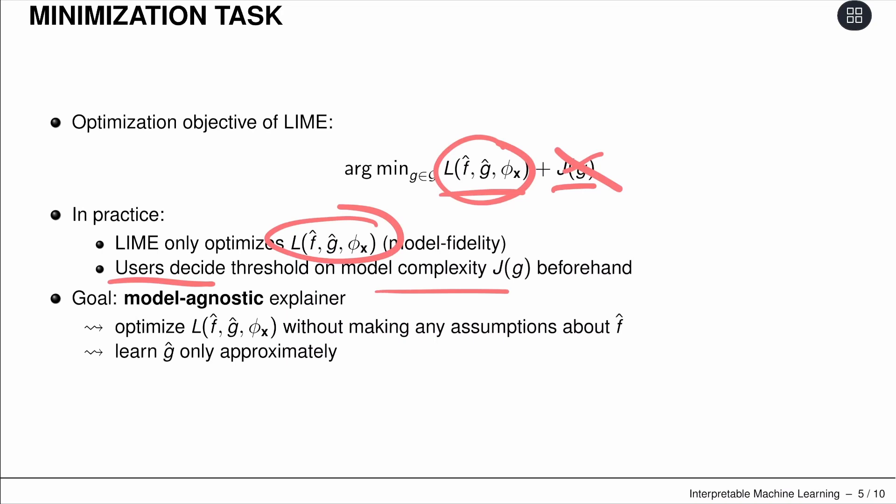The goal is to have a model agnostic explainer, so we optimize our local fidelity without making any assumption about the original model F hat.